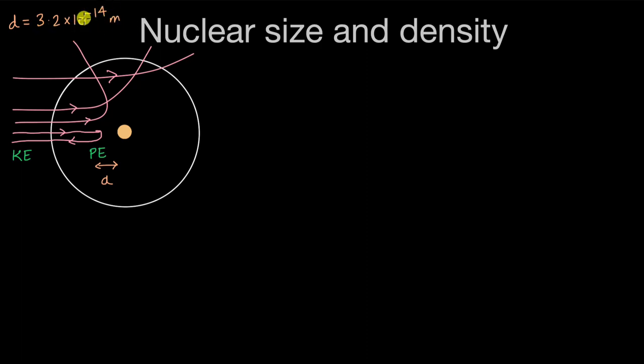This number gave some idea to the size of the gold nucleus, because the size of the gold nucleus cannot be more than this number. When we say size, we can think about radius — the radius of this gold nucleus can in no way be bigger than this number. So this number does not give the actual radius of the nucleus, but it does give some estimate of the size or radius of the nucleus.